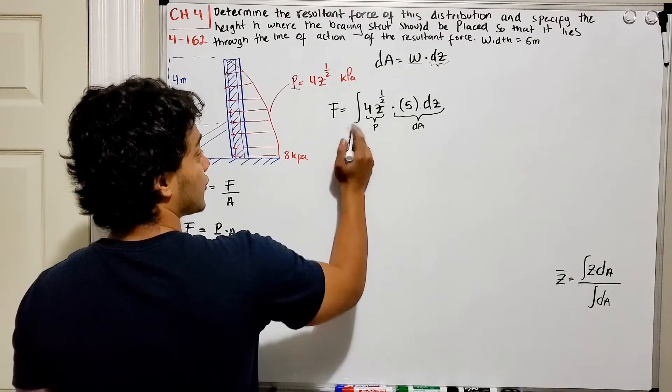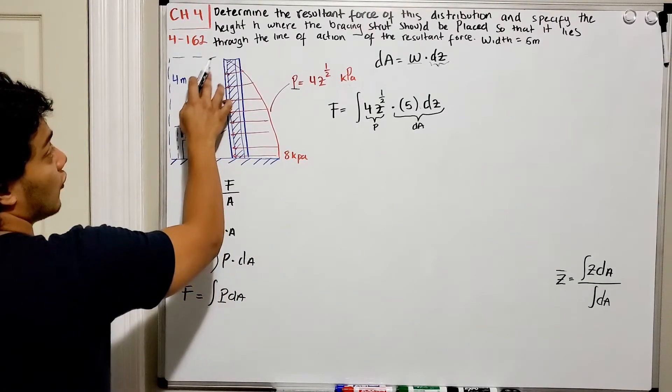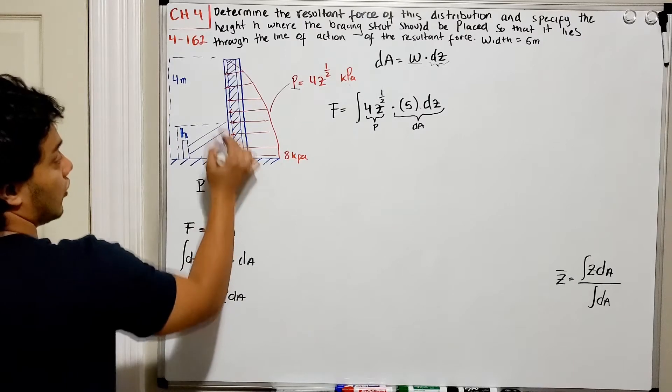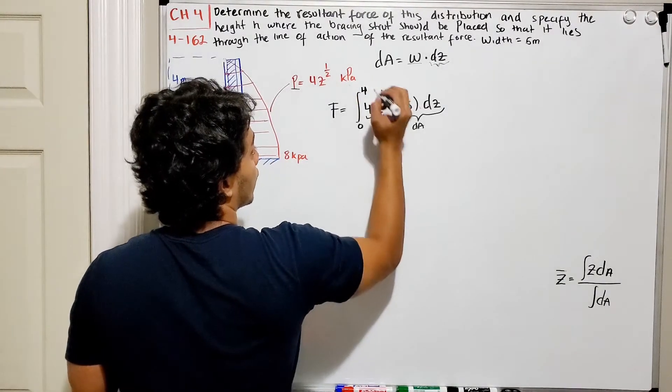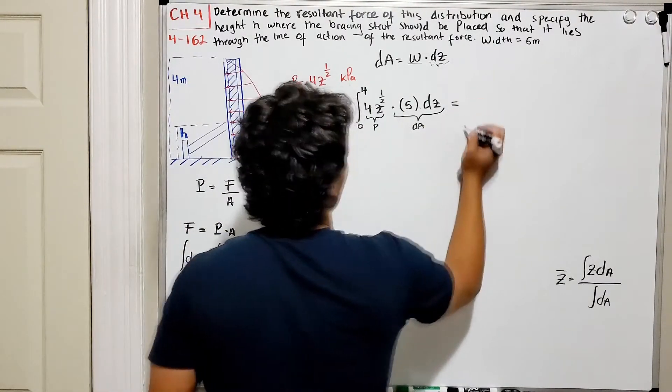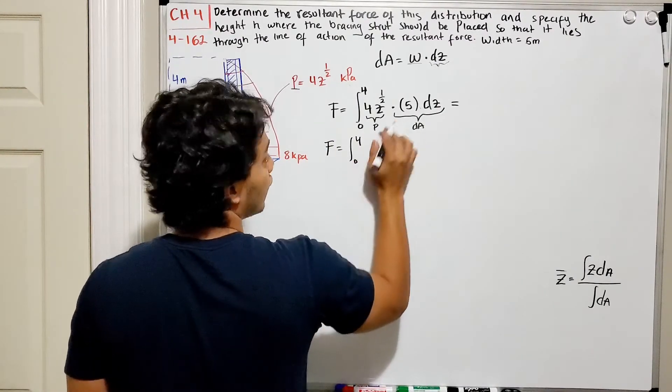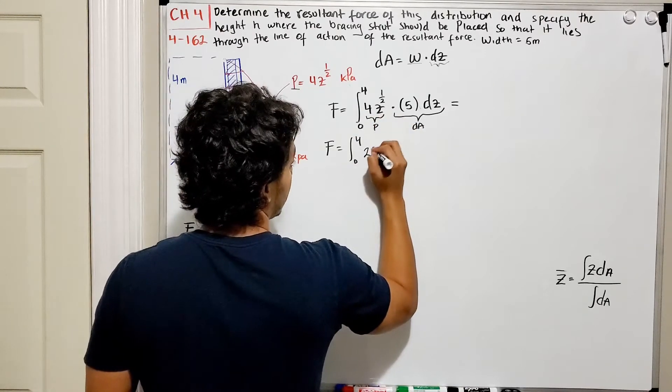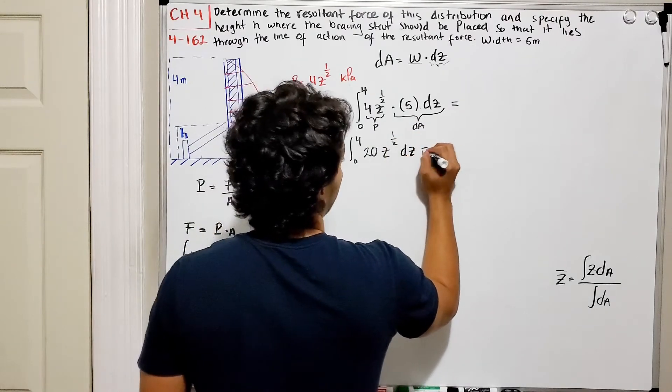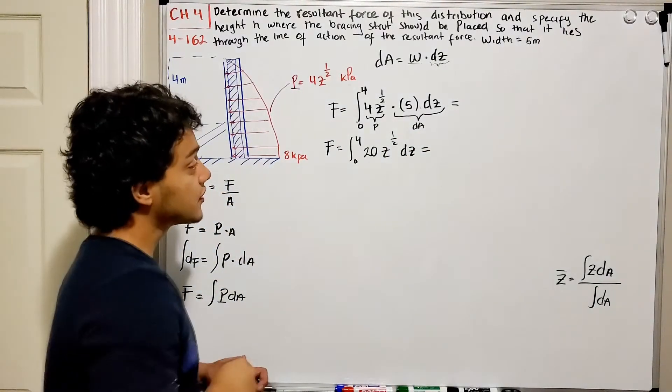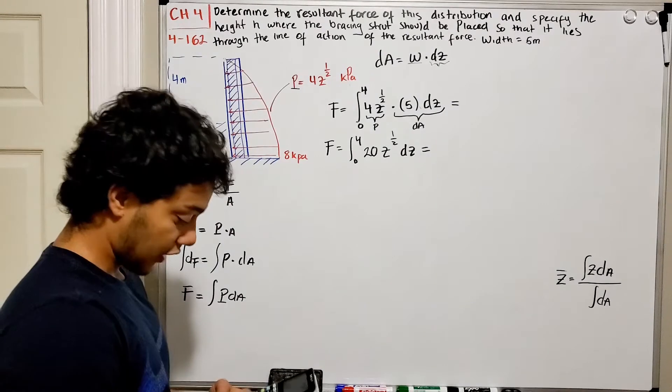From where are the boundaries of this integral? It's going to go from 0 all the way to 4. So I have from 0 to 4. We can simplify this, this is going to be equal from 0 to 4, 4 multiplied by 5, that will give me 20Z to the 1 half dZ. We can either do this integral manually, or we can use our calculator, which makes our likes easier.